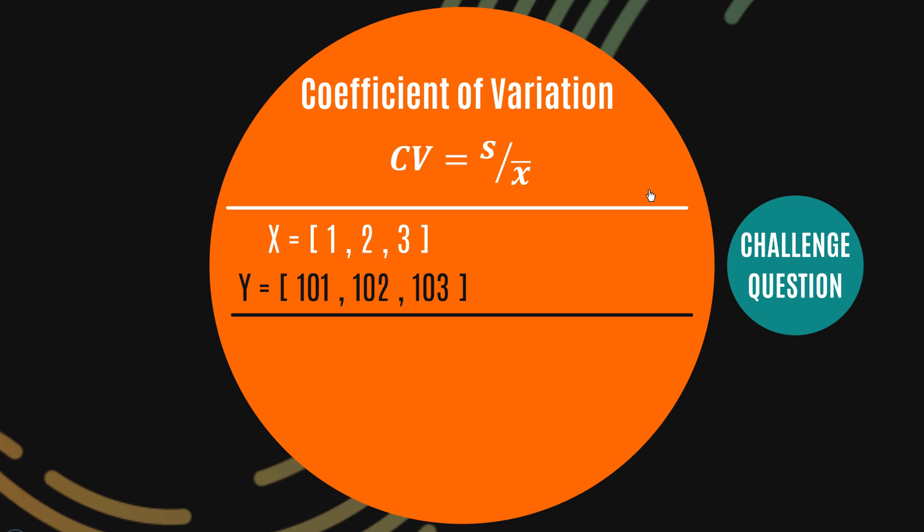Here's the clearest example I could think of that really shows the importance of the coefficient of variation. Say we've got two different data sets, very simple ones. Here's our data set X: 1, 2, 3, and our data set Y: 101, 102, and 103.